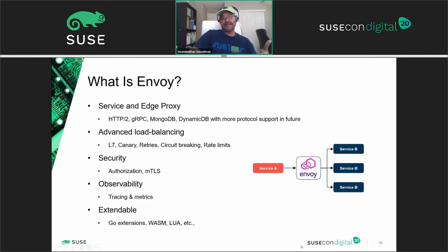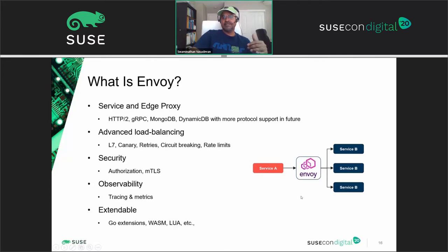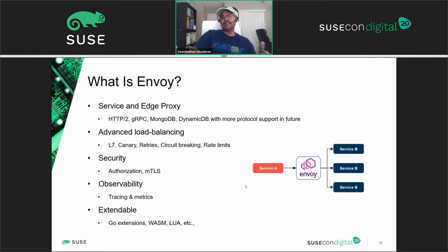Looking at the picture on the right side, there's an Envoy proxy in between services — service B of different versions on the right side and service A on the left. Service A sends information to service B through Envoy acting as a proxy. Envoy can load balance between services, rate limit, do weight-based load balancing, and perform fault isolation.